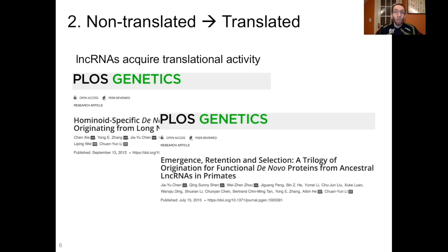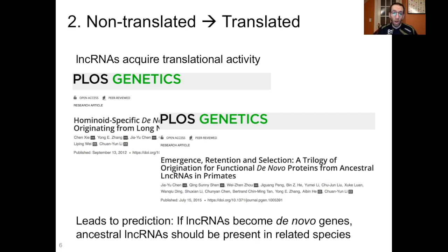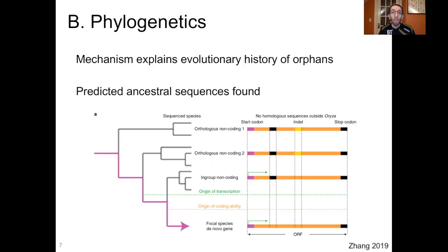The takeaway here is we're putting together what this mechanism looks like to get these de novo genes, and the great thing about it is it leads to a prediction. If long non-coding RNAs become de novo genes, then we should be able to find the ancestral non-coding RNAs in related species. Now, the mechanism we just went over actually explains the evolutionary history, because when we look — having figured out that mechanism — we actually find the predicted ancestral sequences.